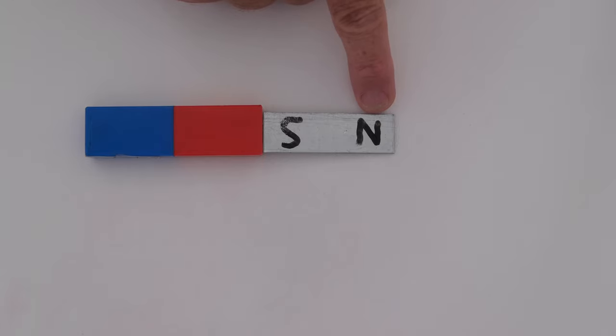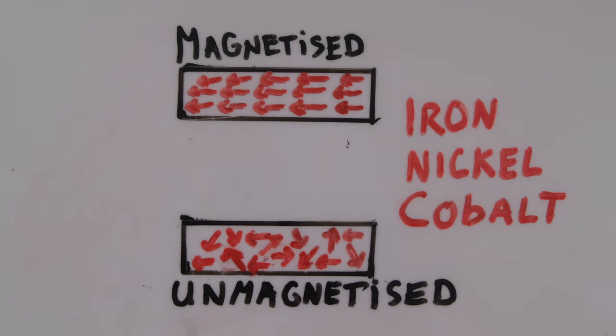To go a little bit deeper into this we have to talk about magnetic domains. Magnetic materials are materials that can be magnetized. The most common ones that we know are iron, nickel, cobalt and there are some rare earth metals.